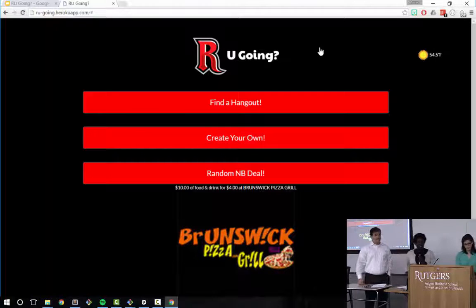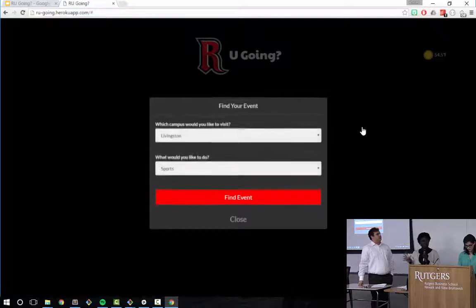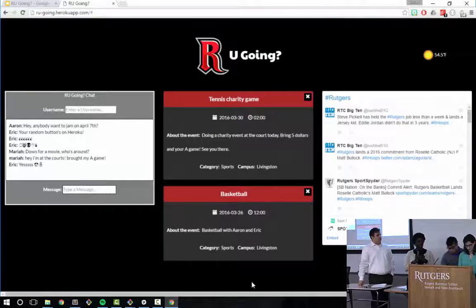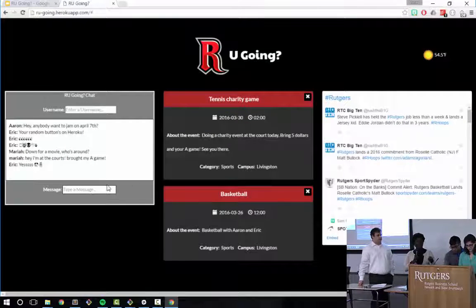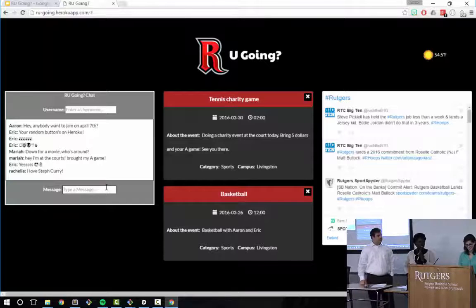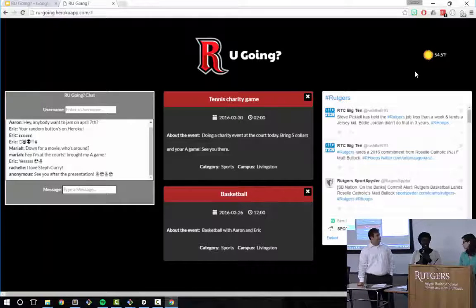If me and Mariah wanted to look for an event, we can click find a hangout, press look for the campus and the event we want to look for, press find event, and we can find everything under Livingston Sports in that event. We also have a hashtag for Rutgers so you can see Rutgers news. And we also have a chat on the other side so you can talk to others about events.